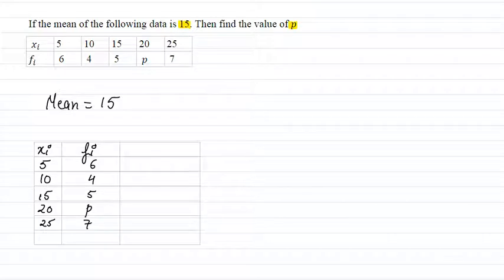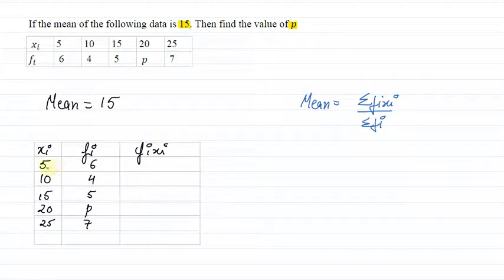Alright, we know that for this given data, mean is equal to summation of fi xi divided by summation of fi. Here we have to find fi xi. Summation means total sum. So fi xi we have to find, first term scale.